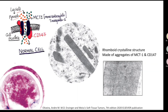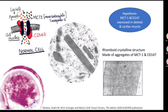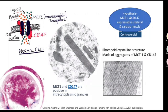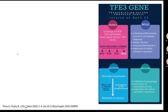MCT1 is a monocarboxylate transporter present in the cell membrane. MCT1 and CD147 normally transport pyruvate and lactate. The cells that use lots of lactate and pyruvate — working 24/7 from birth — are cardiac and skeletal muscle. There is a proposed hypothesis that the cell of origin for alveolar soft part sarcoma can be skeletal or cardiac muscle, but they don't express those markers on IHC, which is why it remains controversial. The eosinophilic PAS-positive diastase-resistant material in alveolar soft part sarcoma represents aggregates of MCT1 and CD147.